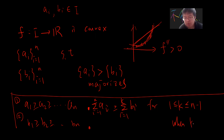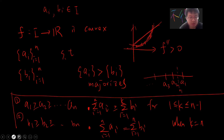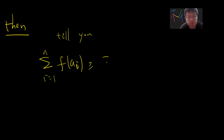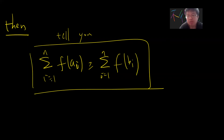The final condition is that when k equals n, the total sums must be equal. So basically, a_1 must be greater than b_1, a_1 + a_2 must be greater than b_1 + b_2, and so on, but their total sum will be the same. These are the four conditions. Assuming f is convex, Karamata's inequality tells you that the sum of f(a_i) for i from 1 to n is greater than or equal to the sum of f(b_i).